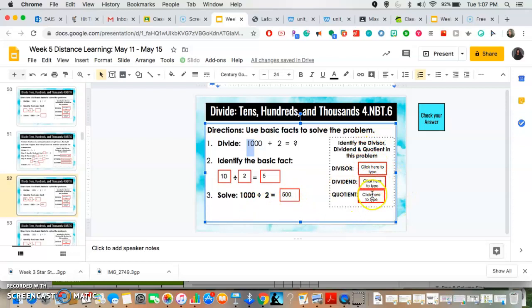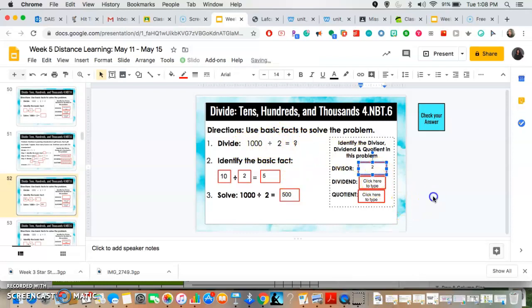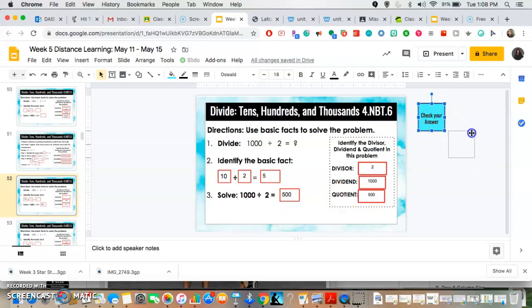On the side right here I want you to complete as well, so identify the divisor, dividend, and quotient in the problem. The divisor is the number doing the dividing, so the number doing the dividing or the smallest number here is two. The dividend is the bigger number. It's how many pieces you have to share, that is one thousand. And lastly, the quotient is a fancy word for an answer. So our quotient here is five hundred and let's check our work.